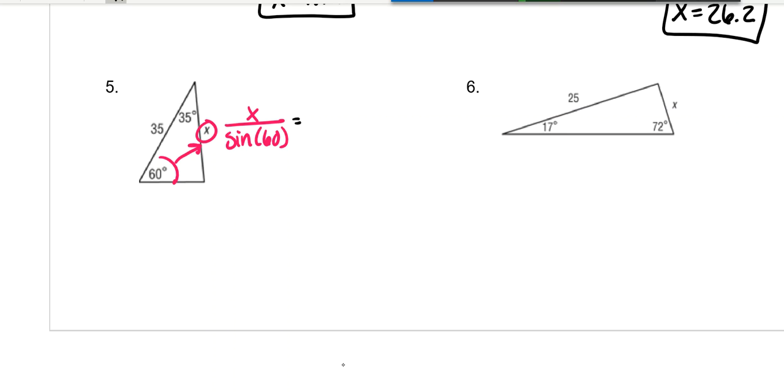Then this angle is the one that goes with the 35, which we don't know. So we're going to have to do 180 minus 35 minus 60. And that gives us 85 degrees for that angle. So the sine of 85 with the 35 on top.